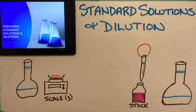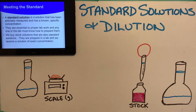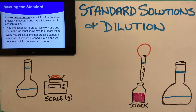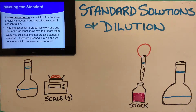Let's start talking about standard solutions. A standard solution is a solution that we know the exact, precise, specific concentration of — it's labeled on the outside and you can absolutely trust that it has that concentration. If it says 3 molar, it's a 3 molar solution; if it's 0.25 moles per liter, it's 0.25 moles per liter.